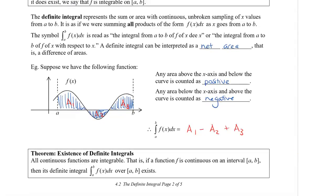So to end off here, there is a theorem to describe the existence of definite integrals. And we know that all continuous functions are integrable. That is, if a function f is continuous on an interval from a to b, then its definite integral over a to b also exists.